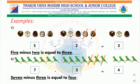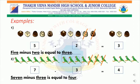Let us see a few examples on subtraction. 5 chocolates minus 2 chocolates is equal to 3 chocolates. We read it as 5 minus 2 is equal to 3. 7 parrots minus 3 parrots is equal to 4 parrots. We read it as 7 minus 3 is equal to 4.